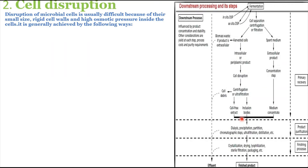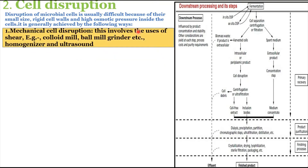The second step is cell disruption, applied when the product is intracellular. Disruption of microbial cells is usually difficult because of their small size, rigid cell walls, and high osmotic pressure inside the cells. It is generally achieved by the following methods. The first is mechanical cell disruption.